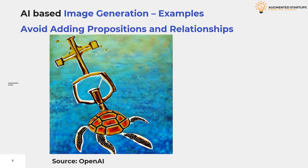To fix this, you can iterate the description, change the order of the words, repeat elements, or add more objects that one would see at the bottom of the sea and on the anchor. You can also use a specific style of painting to help guide the direction. In general, we need to avoid adding propositions and relationships when using AI-based image generators.